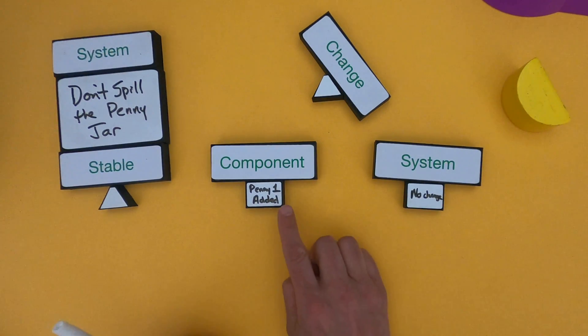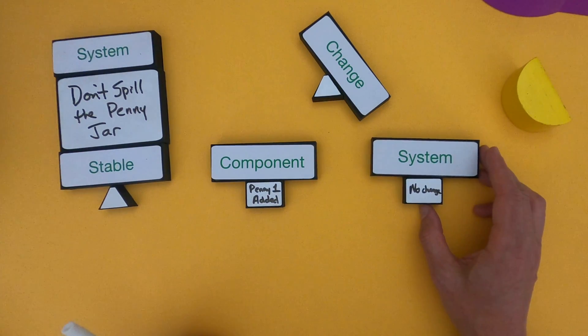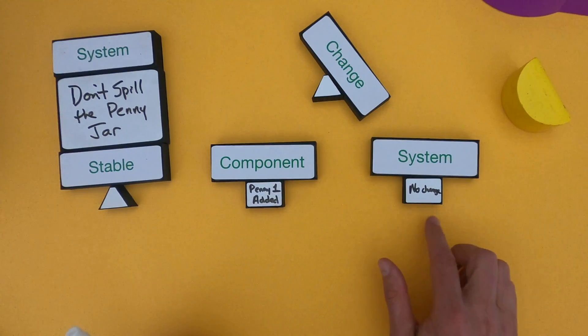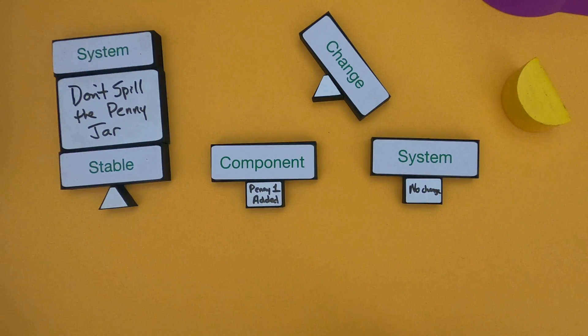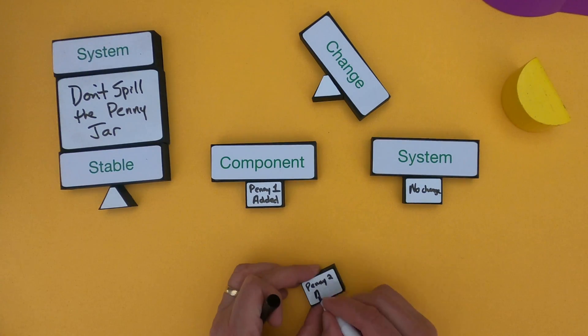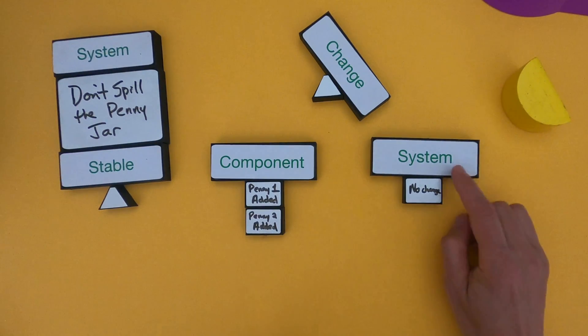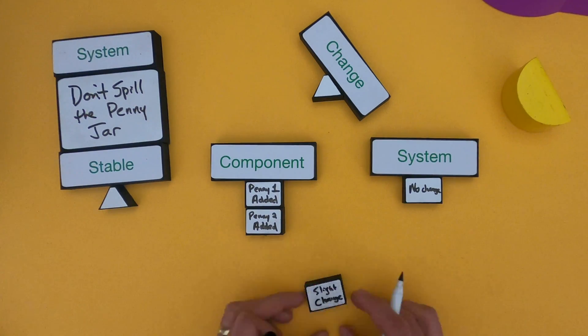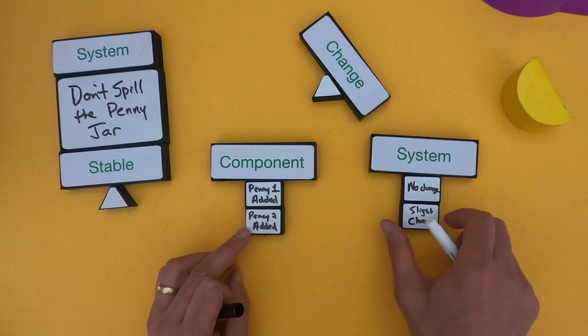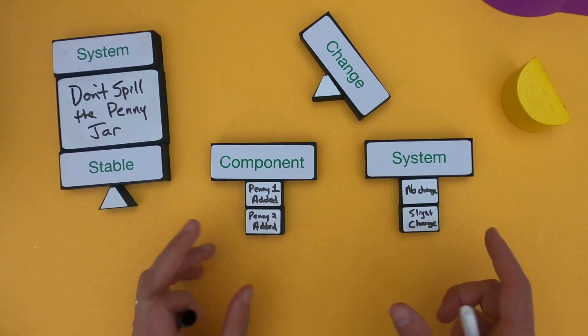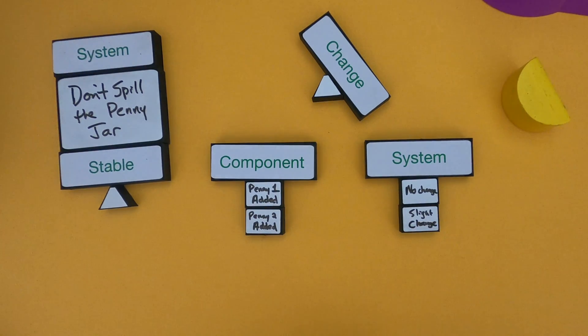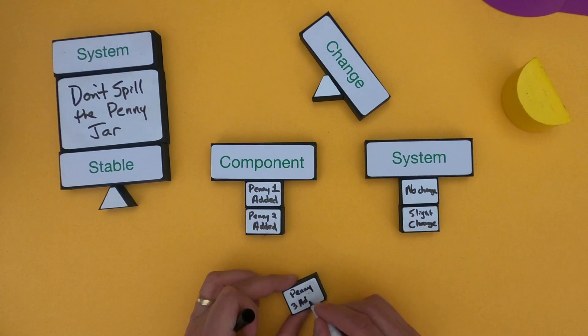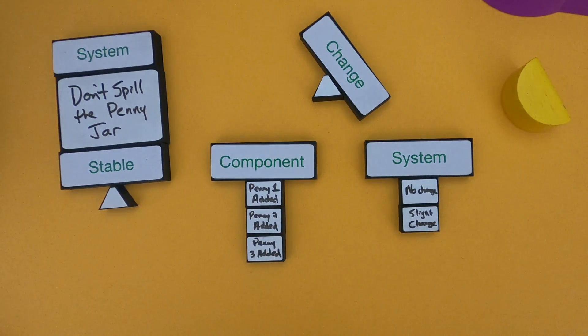If we think about what changed in the overall system of Don't Spill the Penny Jar - as we added penny one, there's no change in the overall system, not much change within the system. What happened next is we added penny two. What was the change in the system? As we added penny two, there was a slight change in the system. You saw it start to tip just a little bit. But then we eventually added penny three.